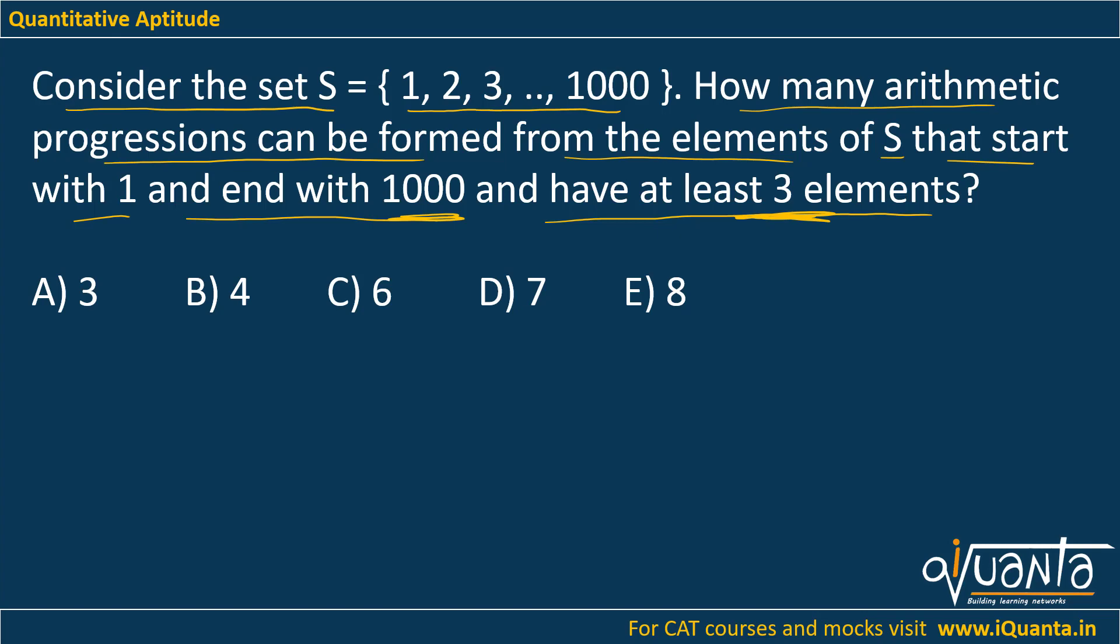You are already familiar with the nth term of an AP. So the last term of the AP which is 1000 will be equal to A plus (N minus 1)D. A is 1 here, plus (N minus 1)D. N denotes the number of terms, D denotes the common difference.